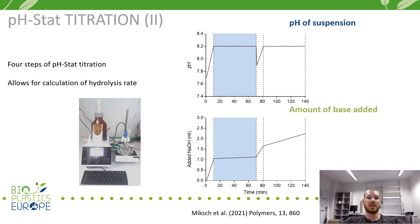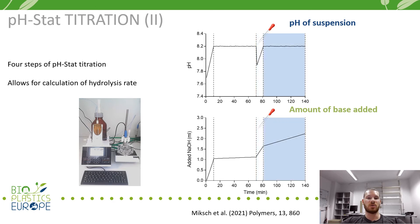The addition of the enzyme solution induces a drastic pH drop in the suspension. After readjustment to pH 8.2 in phase 3, sodium hydroxide is continuously added during phase 4 to counterbalance the decreases in pH in response to the continuous formation of carboxyl groups from ongoing enzymatic degradation of the substrate. The slope of the curve in phase 4 is used to calculate the hydrolysis rate, which is equivalent to the degradation rate of the polymer.